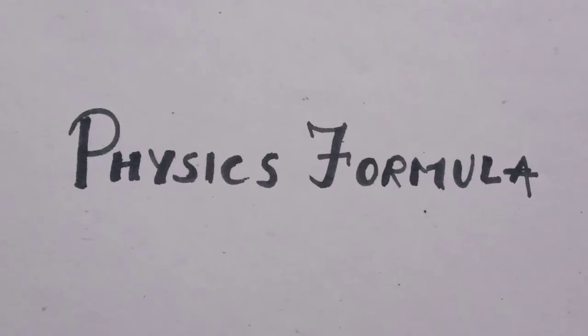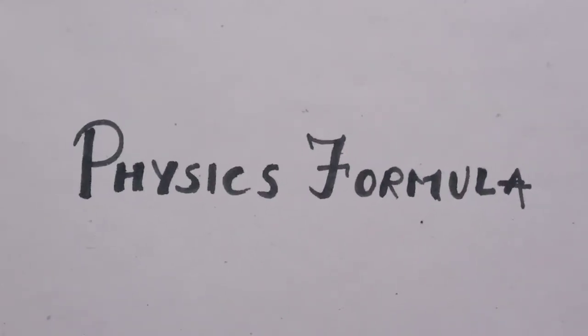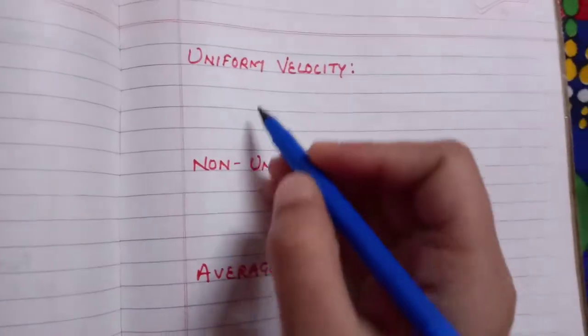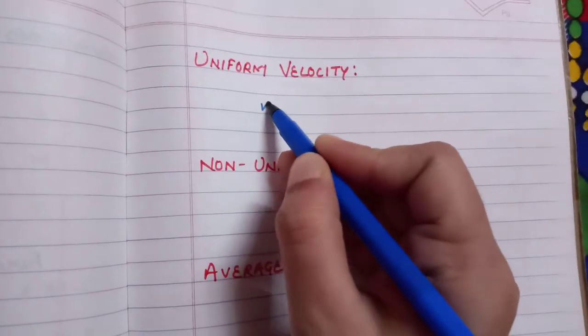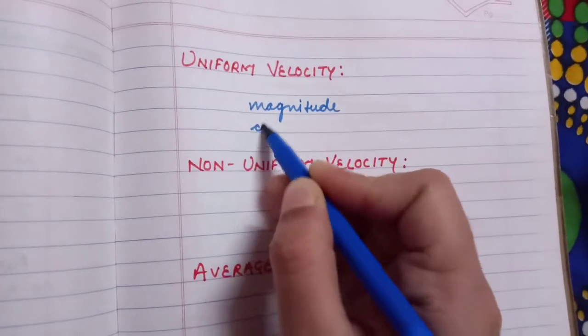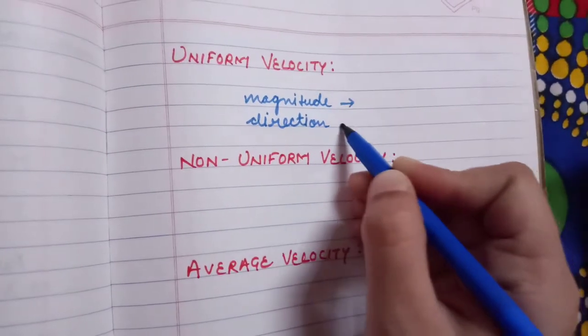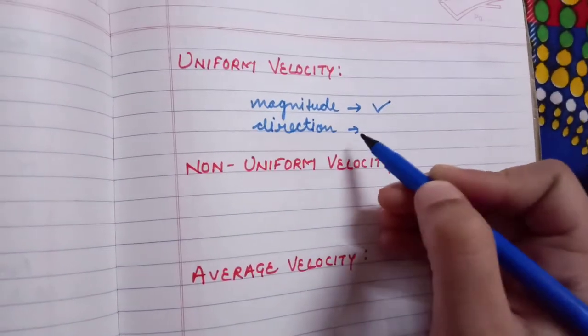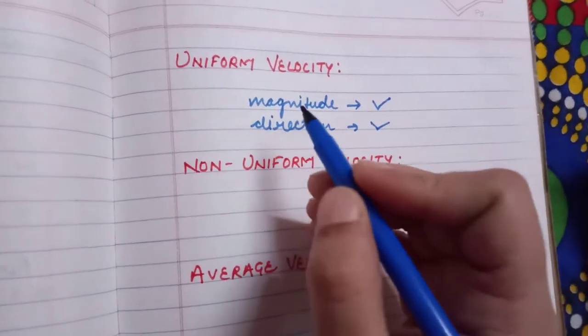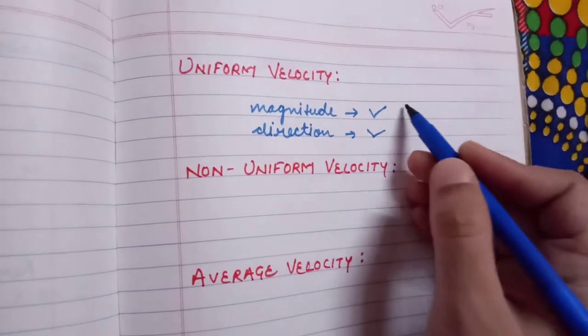First is uniform velocity. A particle is said to have uniform velocity if both magnitude and direction remain the same. Both magnitude as well as direction of its velocity remain the same.